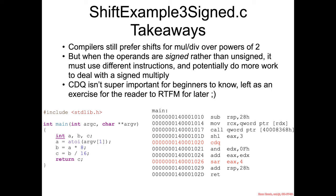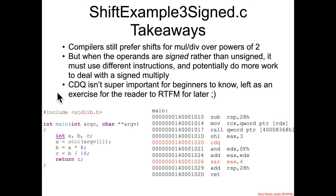The takeaways from shift example 3, signed.c, are that compilers will prefer shifts over multiplies and divides when dealing with powers of two. If it is a signed variable being operated on, the compiler must generate different instructions, such as the arithmetic shift right, in order to maintain signedness as it's shifted to the right, and it might have to do some other things like cdq in order to make sure the math all works out.